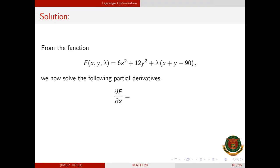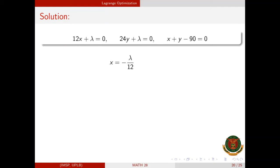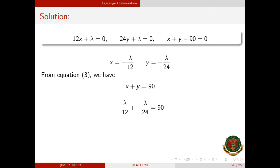From capital F, we solve the partial derivatives. The partial derivative with respect to x is 12x + λ. The partial derivative with respect to y is 24y + λ. The partial derivative with respect to λ is x + y − 90. Setting these to zero gives the system: from equation 1, x = −λ/12; from equation 2, y = −λ/24; from equation 3, x + y = 90. Substituting: −λ/12 + (−λ/24) = 90.